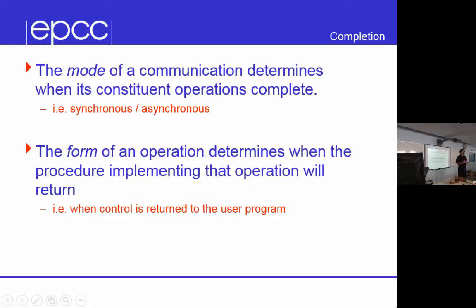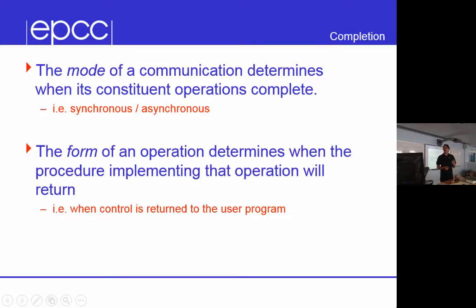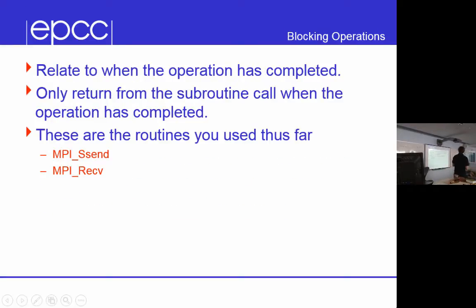Normally, if you call a messaging operation like a send, you'd expect it only returns control to you when that operation is finished. However, you can imagine a situation where control is returned to you immediately. You ask somebody to do something — like make a phone call — then go off and do something else and come back to check whether it's been completed. This in MPI is called the form. The mode is asynchronous or synchronous; the form is a more technical concept. A blocking operation only returns from the subroutine call when the operation is completed — that's normally what you'd expect.